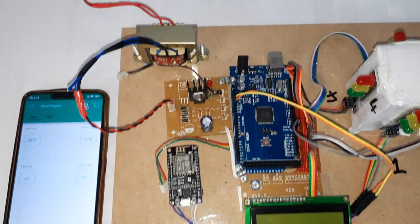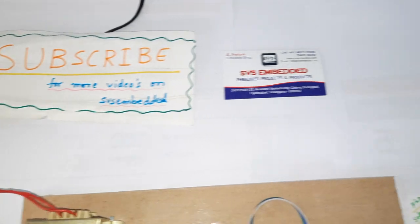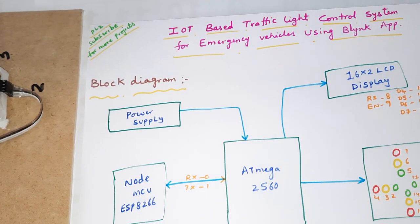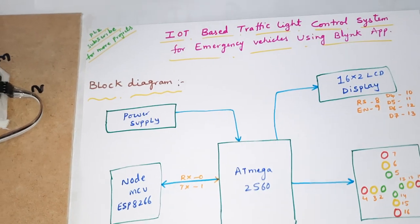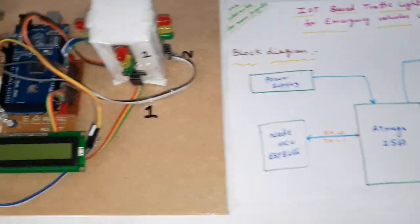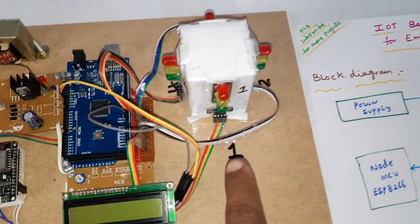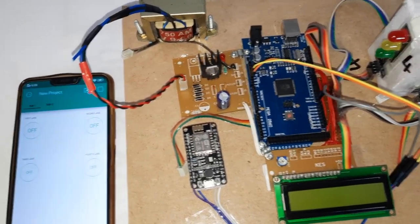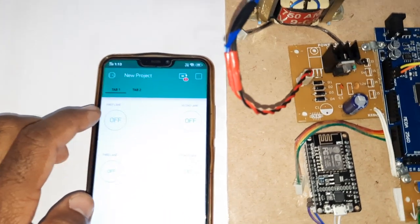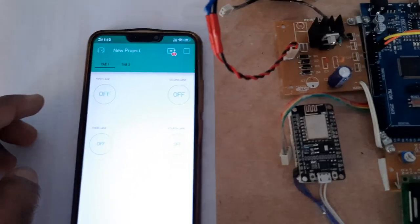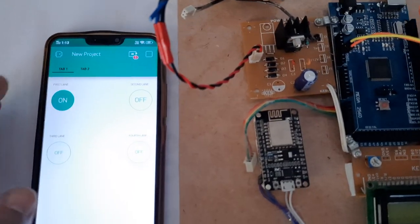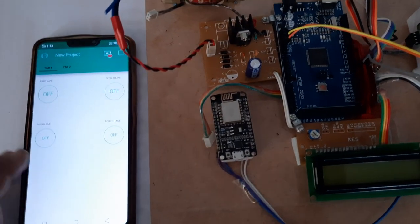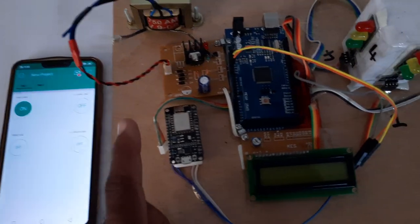Hi, we are from SVS Embedded. The project title is IoT-based traffic light control system for emergency vehicles. We are using a Blynk app to control the traffic lights. In the Blynk app, we are going to control traffic light lanes: first lane, second lane, third lane, and fourth lane.